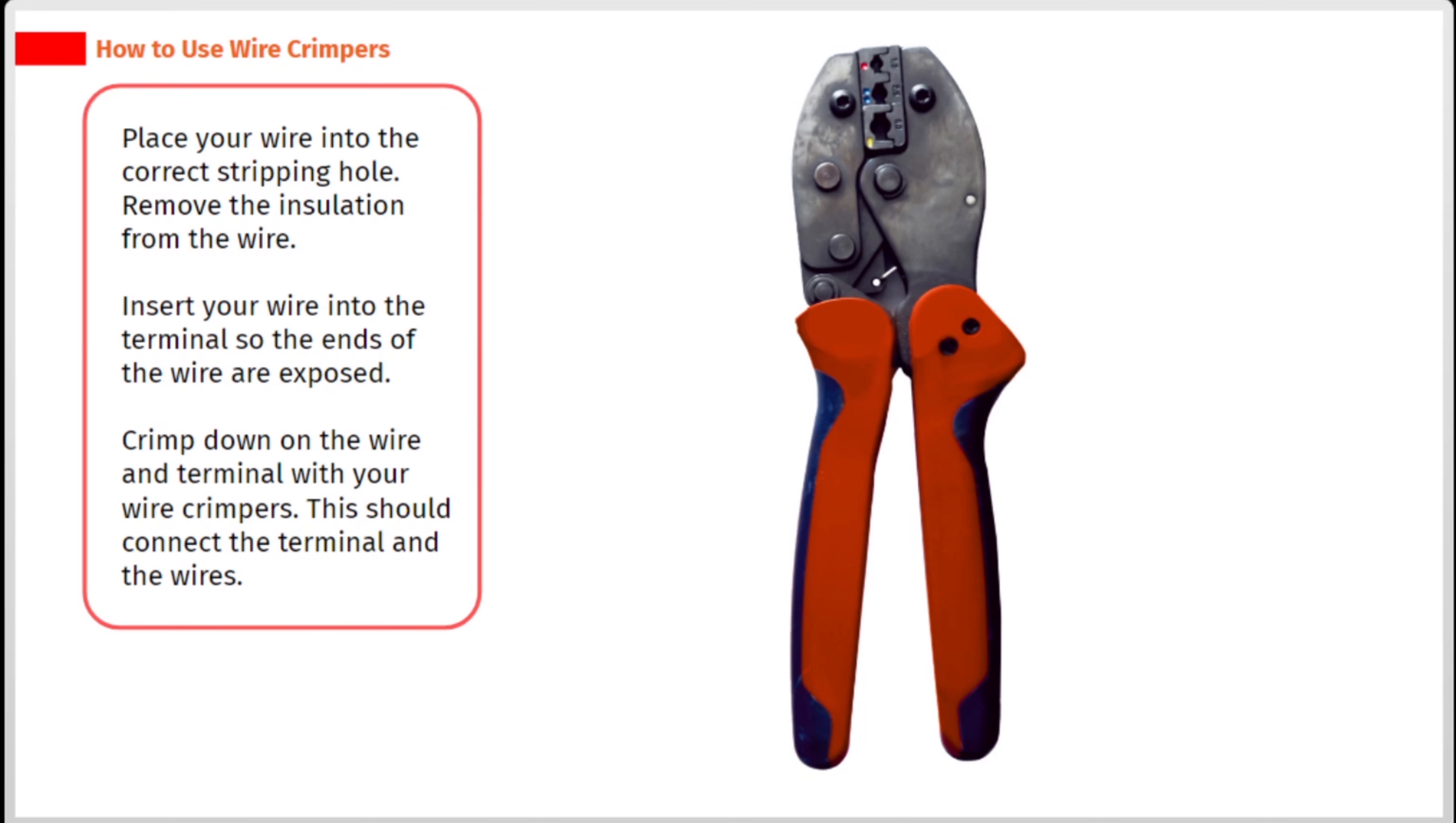Insert your wire into the terminal so the ends of the wire are exposed. Crimp down on the wire and terminal with your wire crimpers. This should connect the terminal and the wires.